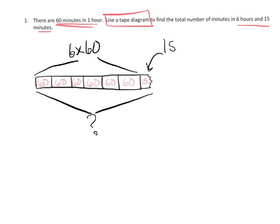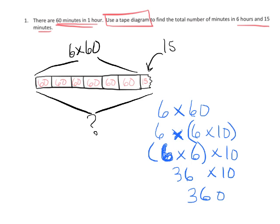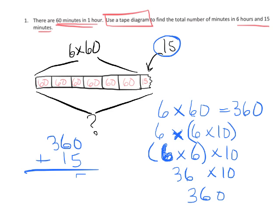The first thing we need to do is 6 groups of 60. We can write that as 6 times 6 times 10, using the associative property. And 6 times 6 is 36, times 10 equals 360. So 6 times 60 is 360. But now we have to add in that extra 15 at the end, so 360 plus 15 gives us 375 minutes total.